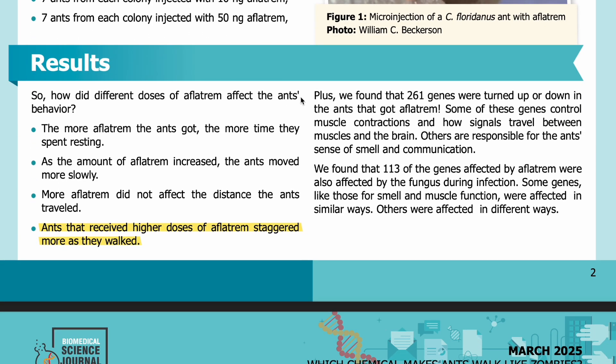Results: So how did different doses of aflatrem affect the ants' behavior? The more aflatrem the ants got, the more time they spent resting. As the amount of aflatrem increased, the ants moved more slowly. More aflatrem did not affect the distance the ants traveled. And ants that received higher doses of aflatrem staggered more as they walked.